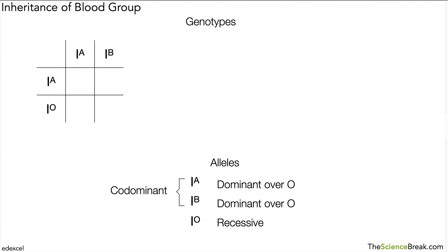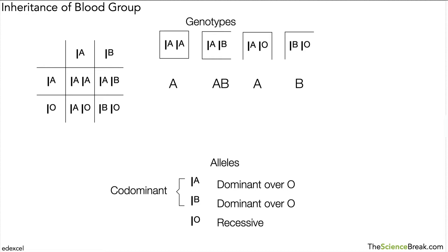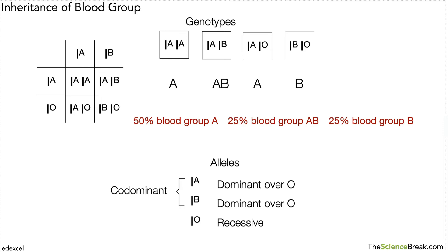Here's another example — pause here and try this one for yourself. The combination of alleles for this example gives us genotypes of: blood group A, AB, A, and B. So we have 50% blood group A, 25% blood group AB, and 25% blood group B. If we write the ratio it's 2 to 1 to 1 — remember to write which blood group goes with which ratio number — so it's 2 to 1 to 1, A to AB to B.